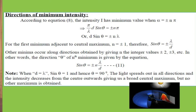When d = λ (special case), for the first minima sin θ = 1, so θ = 90°. In that case, the central maxima extends up to 90°. As we increase the slit size, the position of the first minima moves closer to the center point.